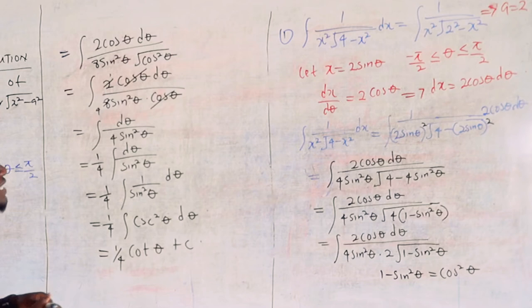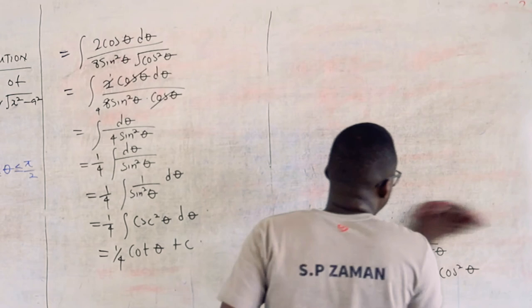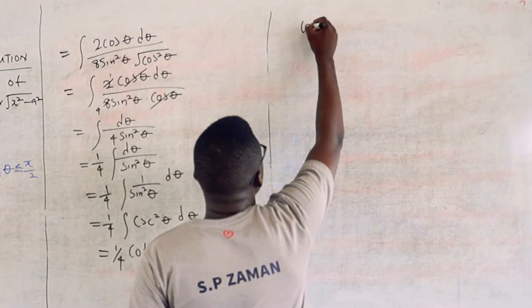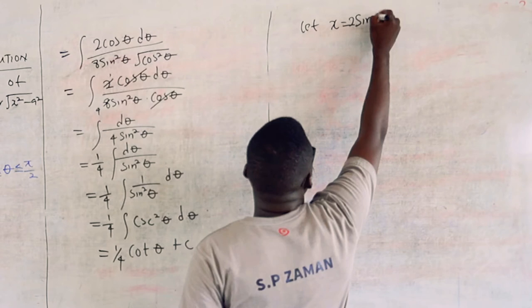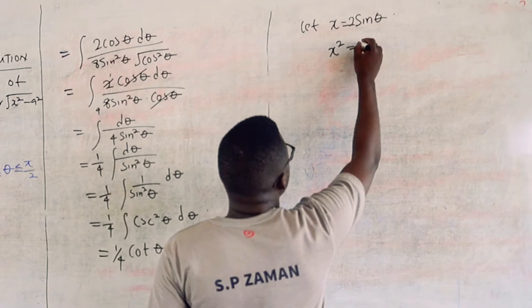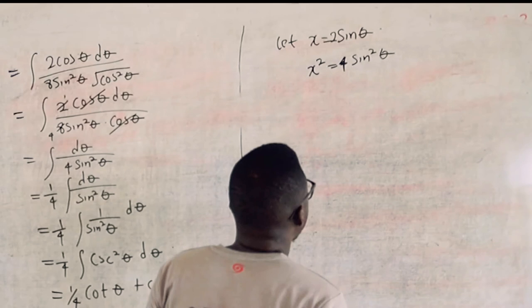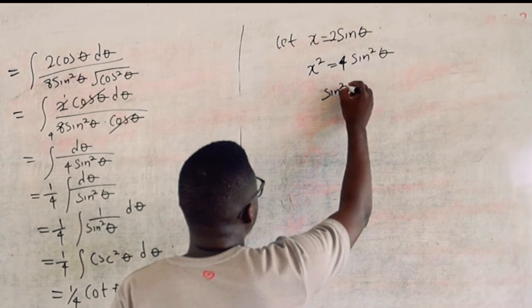I still need to back-substitute, because I said let x equal 2 sine theta. From x equals 2 sine theta, I have sine theta equals x over 2, so sine squared theta equals x squared over 4.